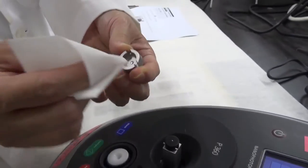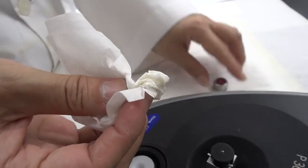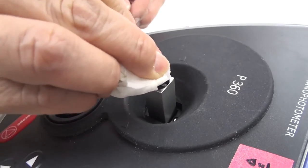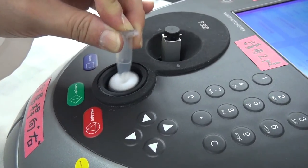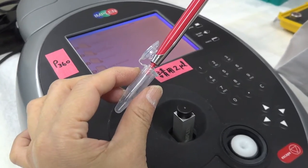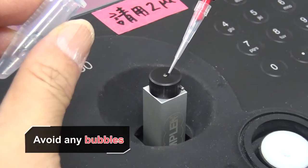11. Remove the lid. Wipe away the distilled water or blank solution from the lid and the sample well of the cuvette with a Kim wipes tissue. 12. Mix the sample solution by vortexing. Pipet 2 microliter sample into the sample well of the cuvette. Avoid any bubbles.